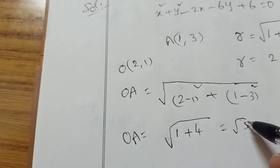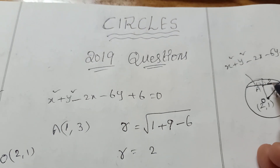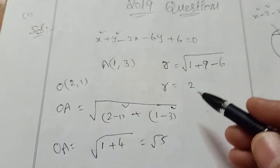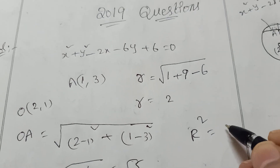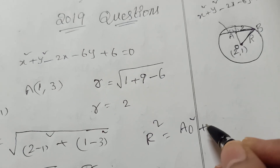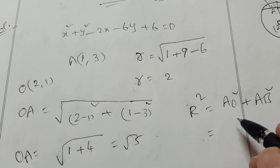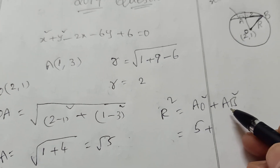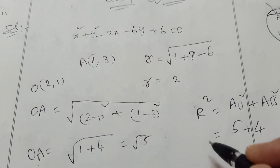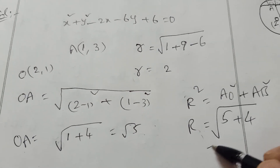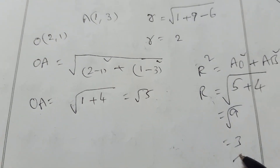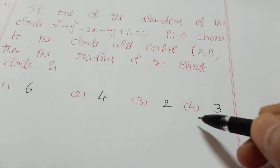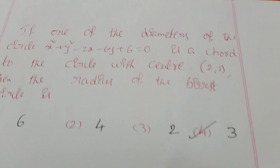OA is √5. Now using the Pythagorean theorem: R² = OA² + AB², where AB is the small radius = 2. So R² = 5 + 4 = 9, giving R = √9 = 3. The answer is option 4, which is 3.